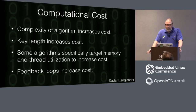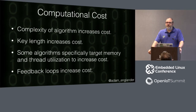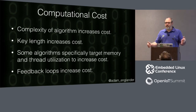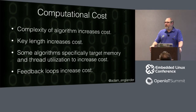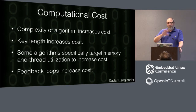There are some algorithms that specifically target memory and thread utilization to increase cost. A lot of modern cryptography algorithms — especially for password hashing — like Argon2i let you specify how many threads to use and how much memory, so it actually increases the amount of time it takes to hash your values, because it uses a memory space larger than the CPU address, so the CPU has to do two calculations to deal with that memory, plus feedback loops. This applies whether it's block-level encryption or a key derivation function for passwords.